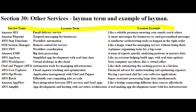Imagine you have a small business and you need to send newsletters or updates to your customers. Amazon SES is like your trusted postman who takes care of delivering these emails for you. You prepare the content of your emails, and SES ensures they reach your customers' inboxes without getting lost or delayed. It's like having a reliable delivery service for your messages, making sure your emails are sent securely and don't end up in the spam folder. Amazon SES helps businesses maintain a smooth and reliable communication channel with their customers through email.